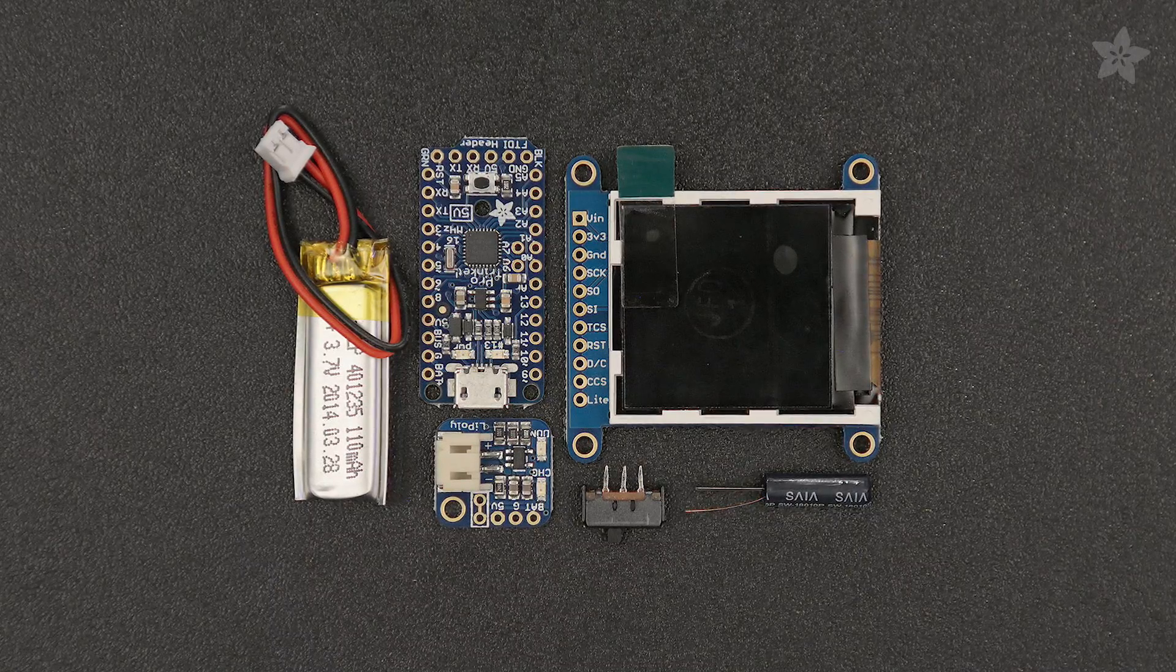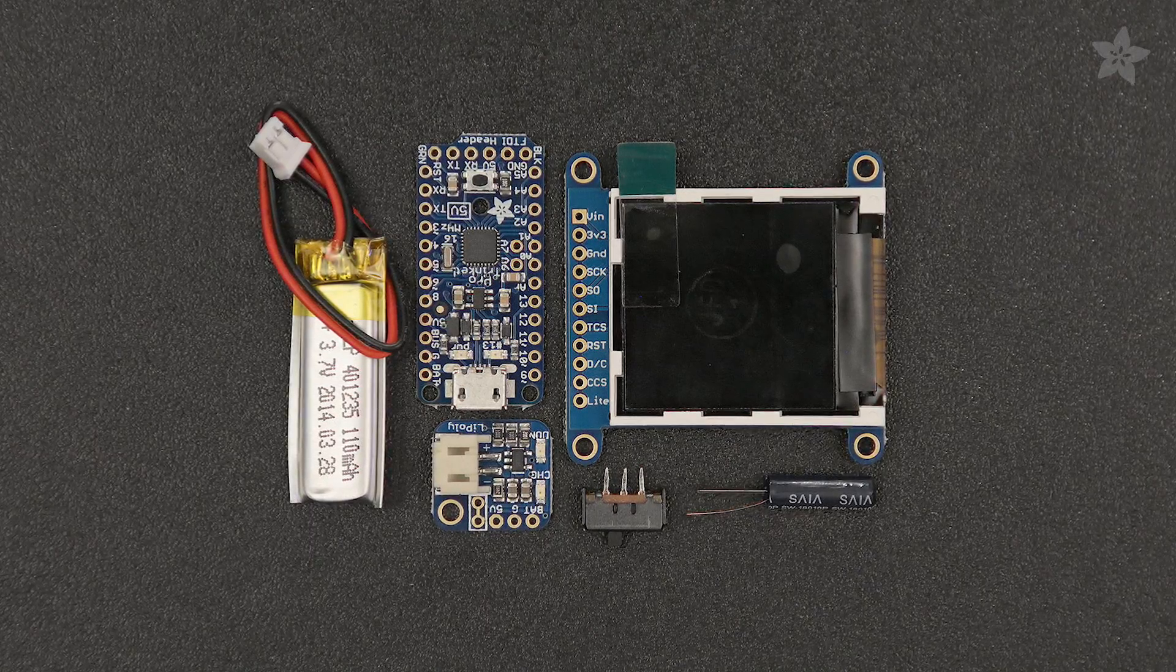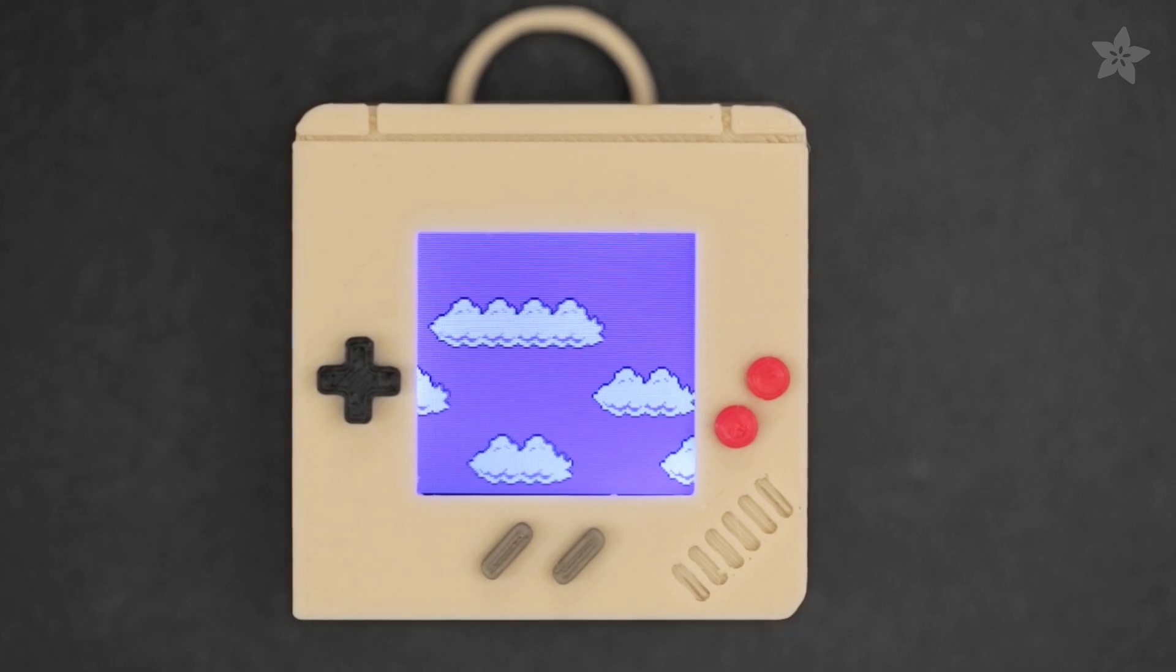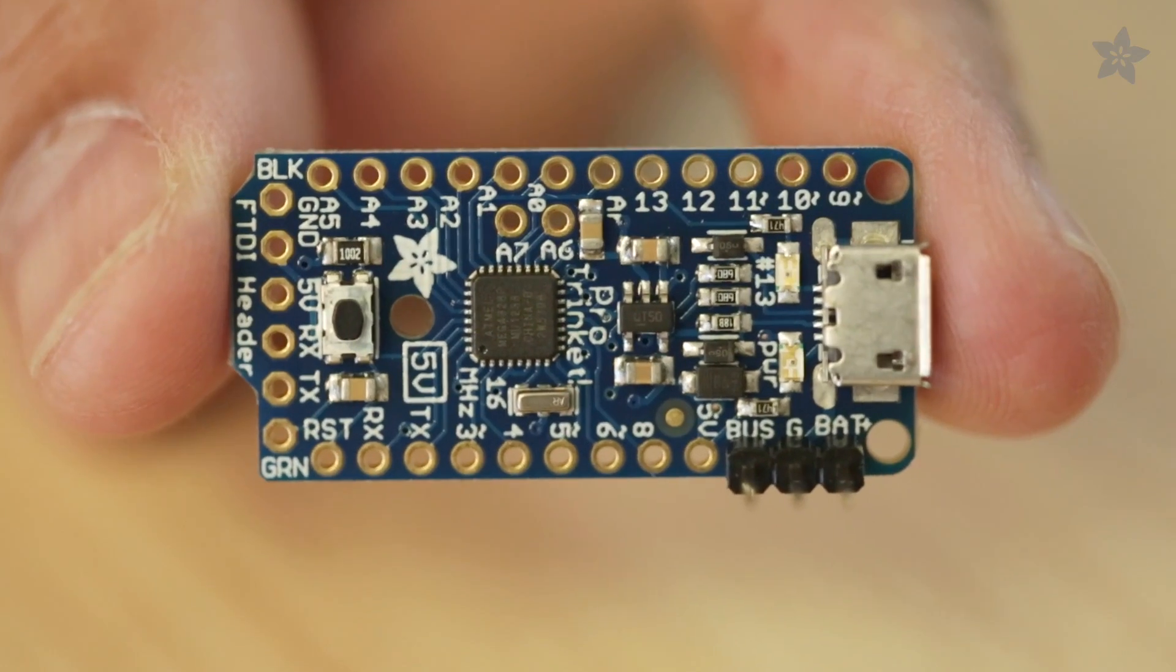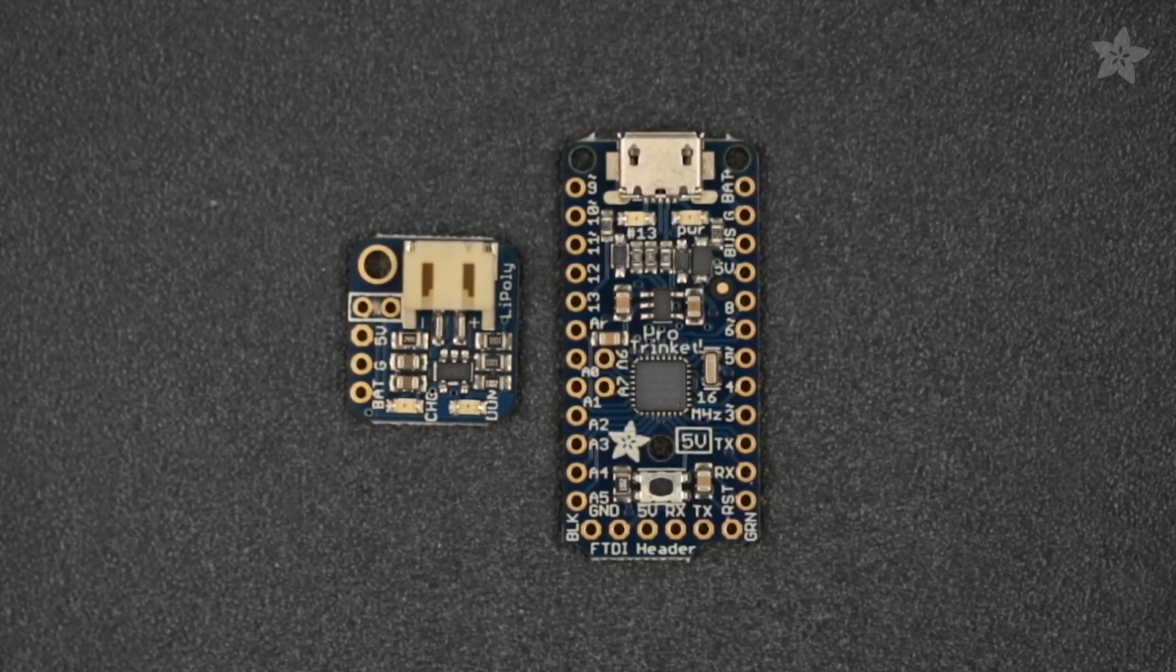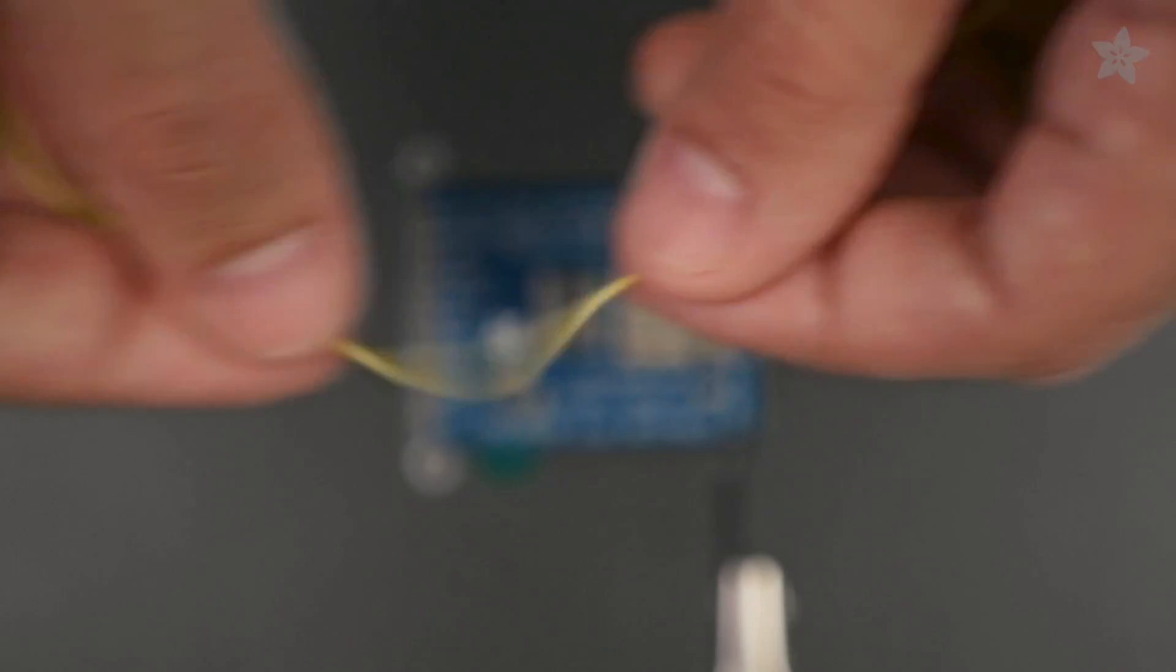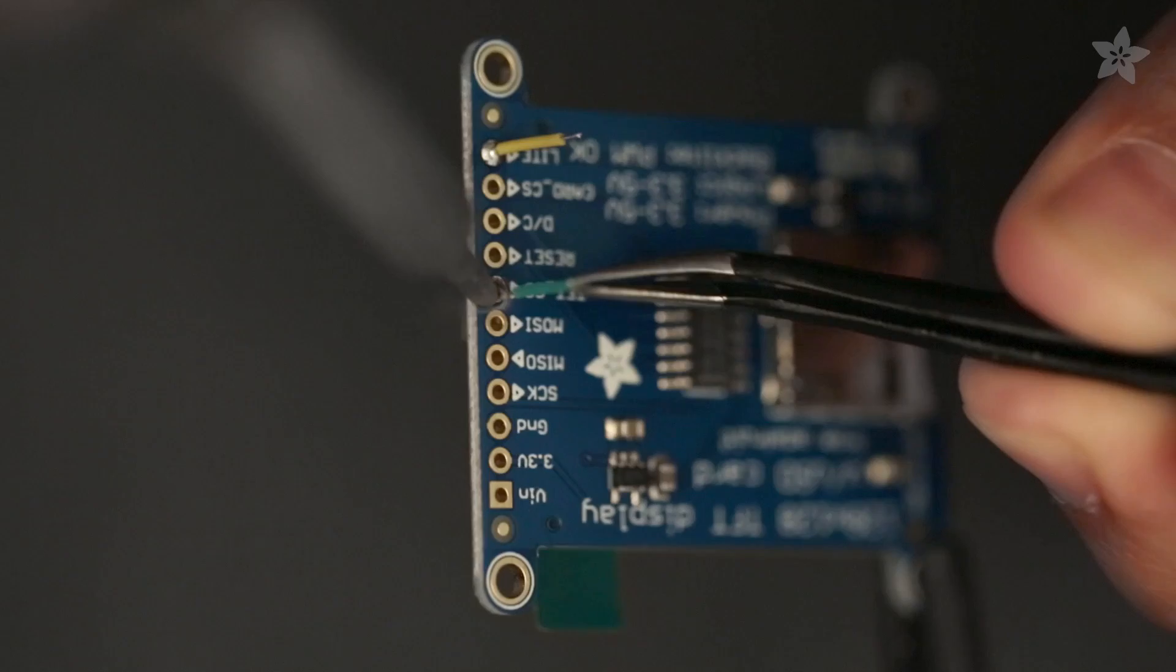You can get the parts to build this project from the shop on Adafruit.com. This tiny 1.4 inch TFT display comes in at 128 by 128 and interfaces with the Pro Trinket Microcontroller over SPI using Adafruit Arduino libraries. The LiPoly backpack adds a rechargeable power circuit. It's especially convenient for small and enclosed projects.